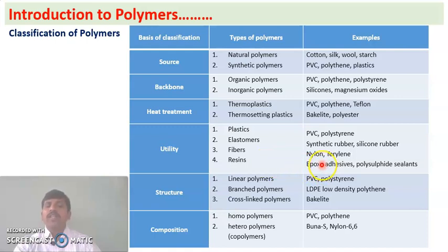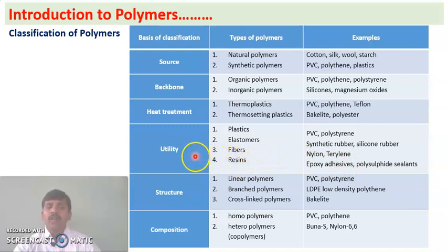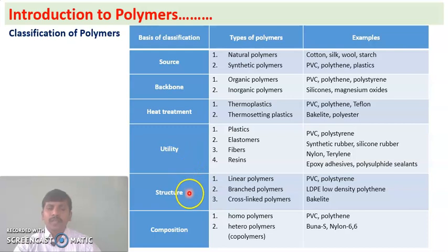Resins are another type of polymer. Examples are epoxy adhesives and polysulfates. This completes the classification of polymers based on utility.